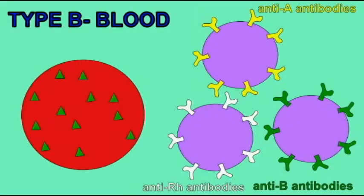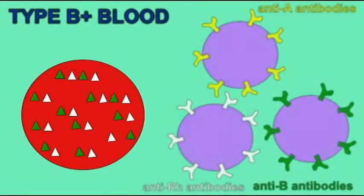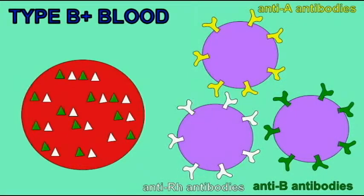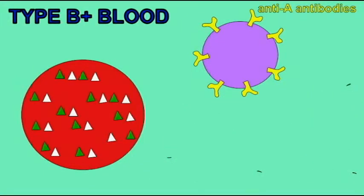Individuals with B negative blood type produce B antigens on red blood cells. Anti-B antibodies cannot be produced because they would react against self, so B negative individuals only make anti-A and anti-RH antibodies. Individuals who are B positive have both B and RH antigens on their red blood cells. Anti-B and anti-RH antibodies cannot be produced because they would react against self, so they would only make anti-A antibodies.